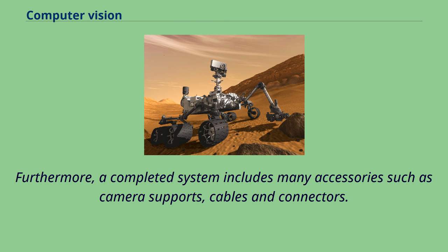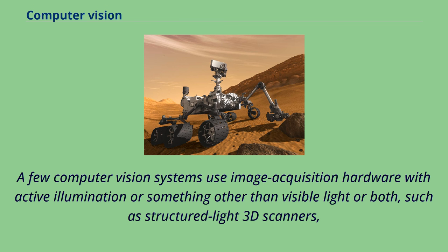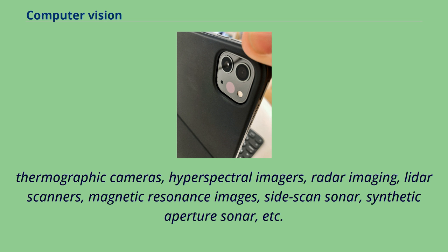Most computer vision systems use visible light cameras passively viewing a scene at frame rates of at most 60 frames per second. A few computer vision systems use image acquisition hardware with active illumination or something other than visible light, such as structured light 3D scanners, thermographic cameras, hyperspectral imagers, radar imaging, LiDAR scanners, magnetic resonance images, side scan sonar, synthetic aperture sonar, etc. Such hardware captures images that are then processed often using the same computer vision algorithms used to process visible light images.